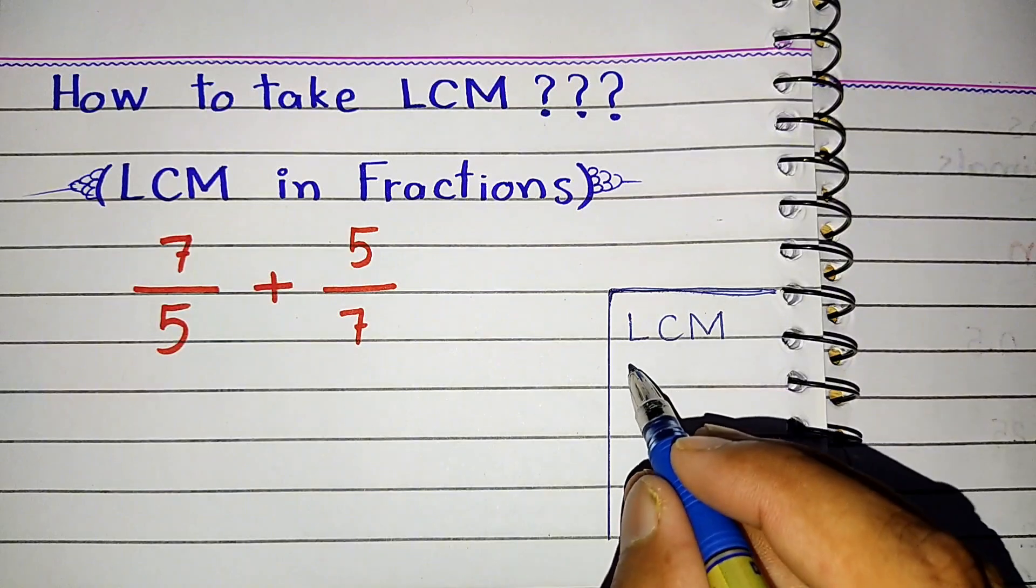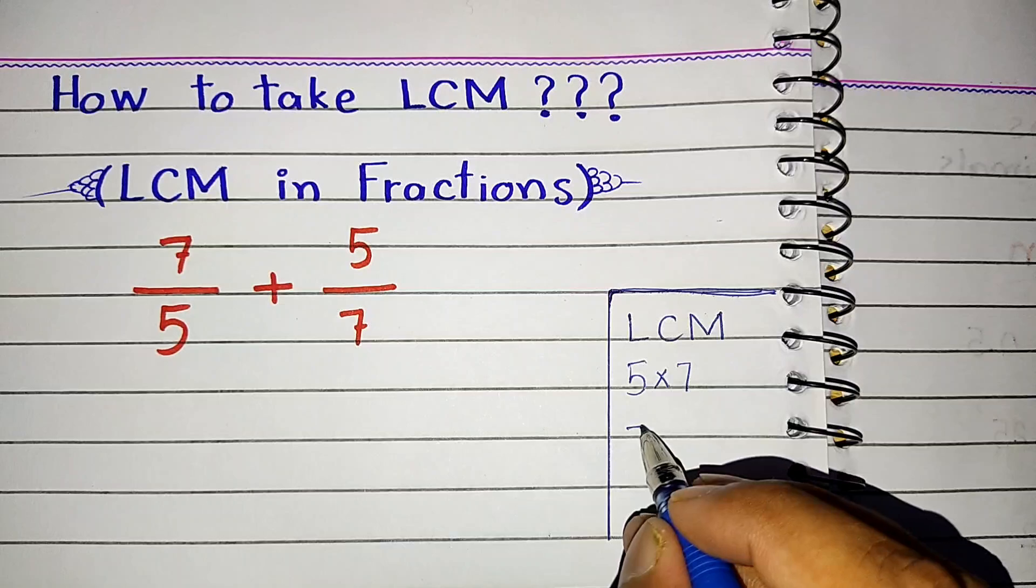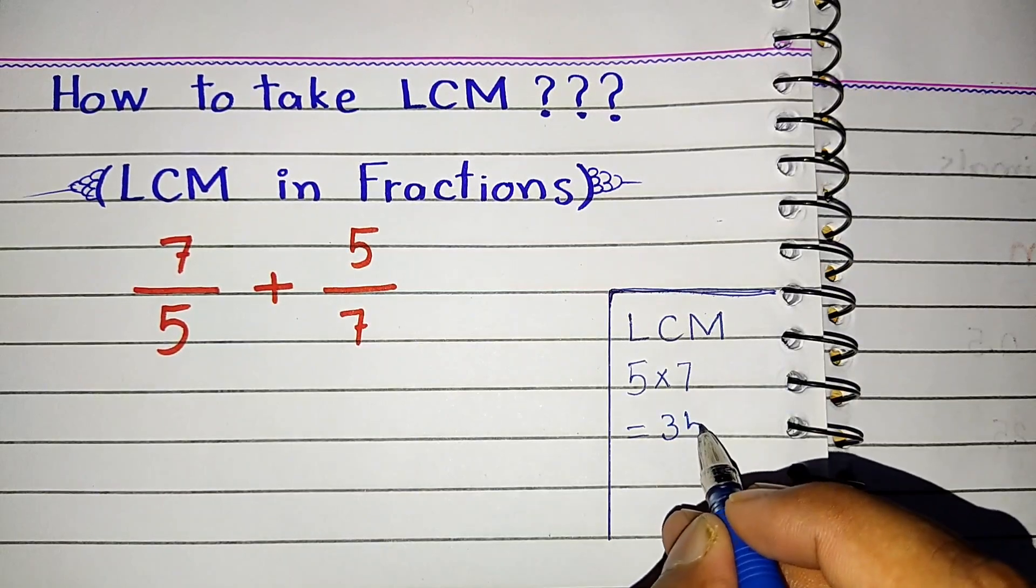Simply you have to multiply. You can multiply directly 5 times 7 and you can get the LCM that is 35. Our LCM is 35.